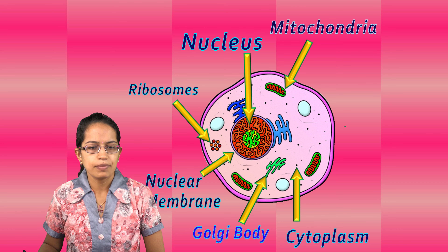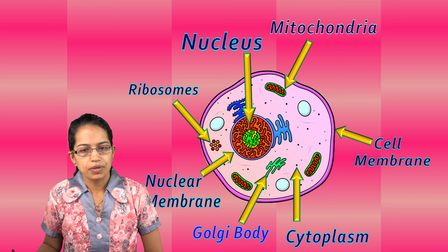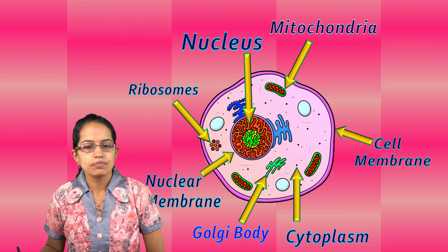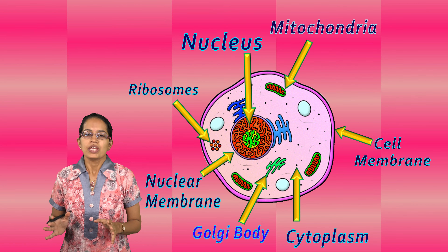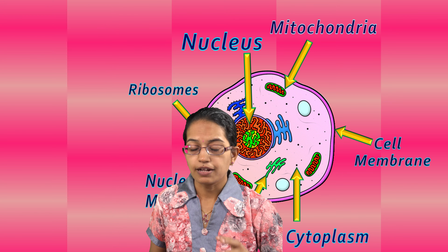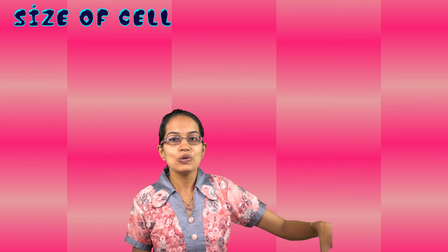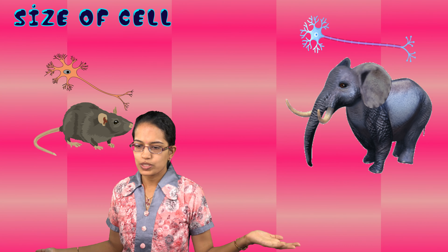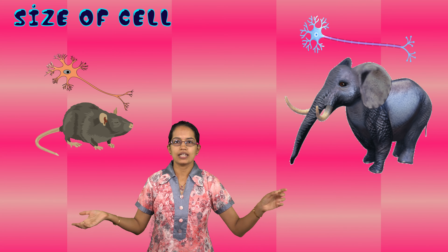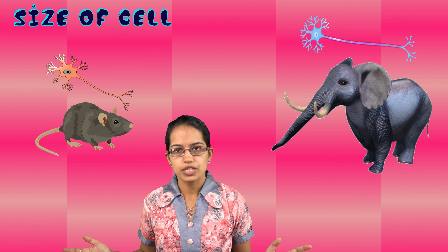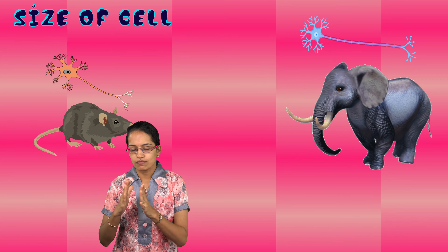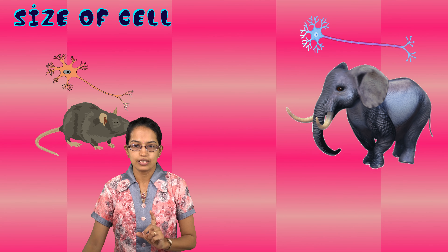The nucleus is surrounded by a membrane known as the nuclear membrane, similar to the cell which is surrounded by the cell membrane. The cell membrane is permeable, meaning there is exchange of materials which takes place from outside. Between two cells, there is a medium that helps to exchange things. An important concept is that the size of a cell has no relation to the actual size of a body — both an elephant and a rat have nerve cells that are long and branched, and the cell size is not bigger in an elephant compared to a rat.